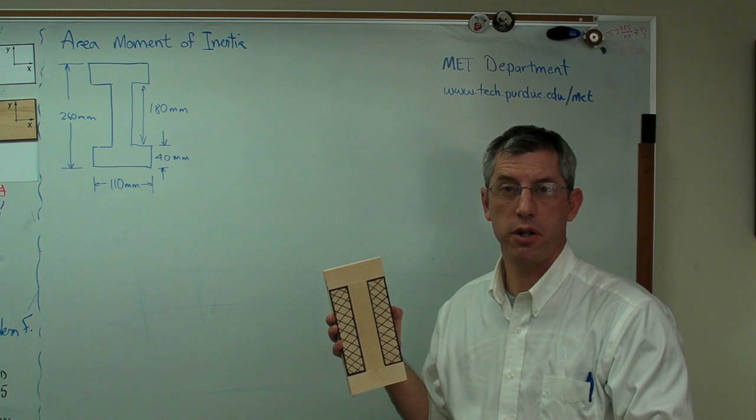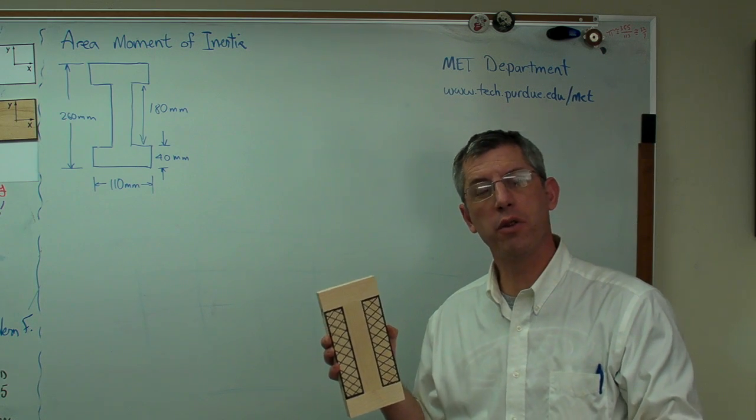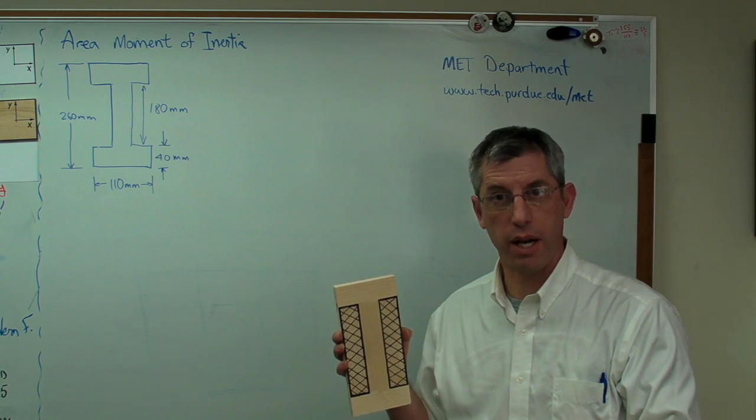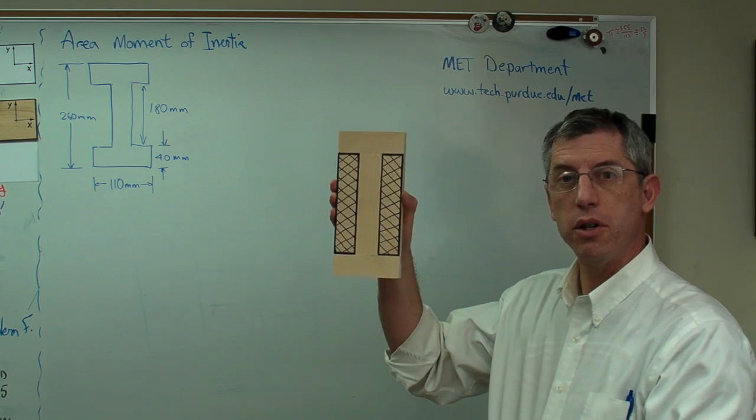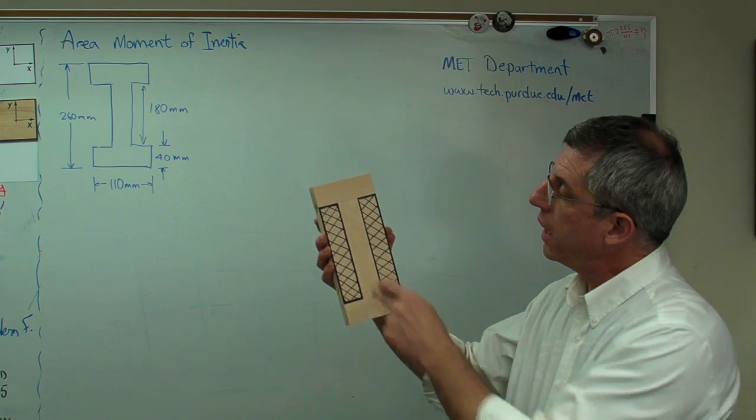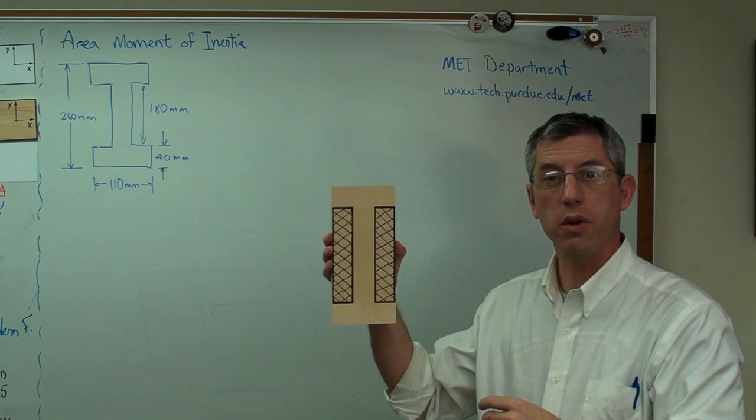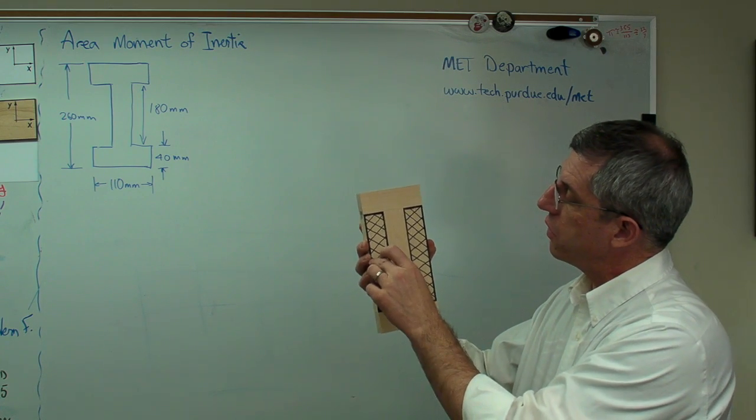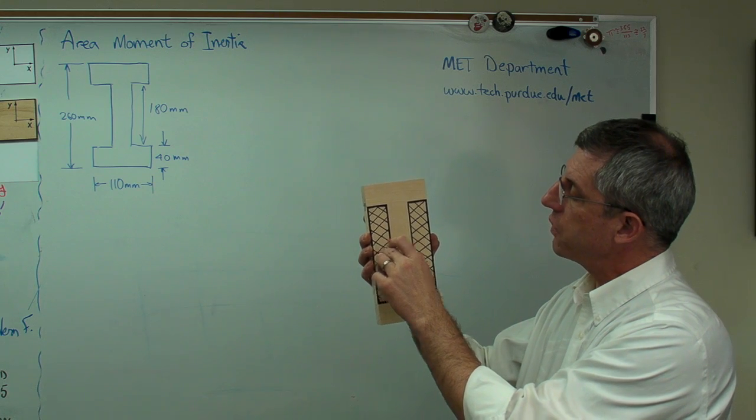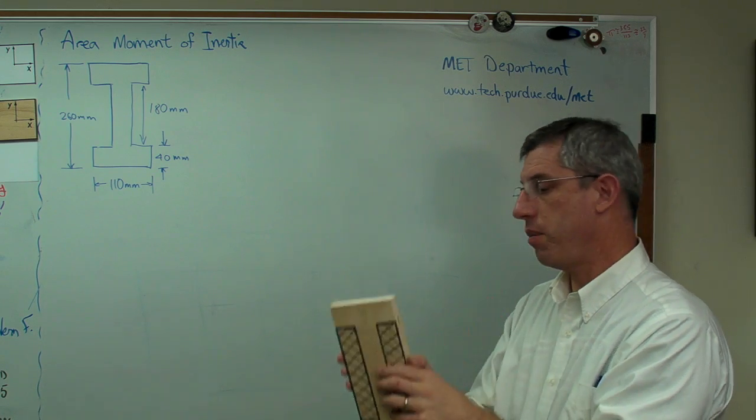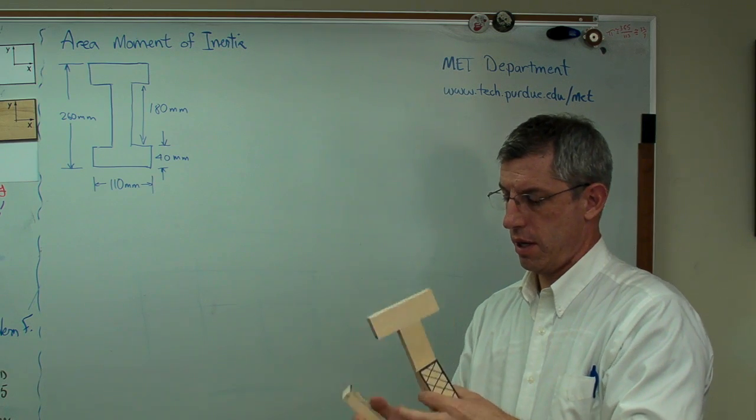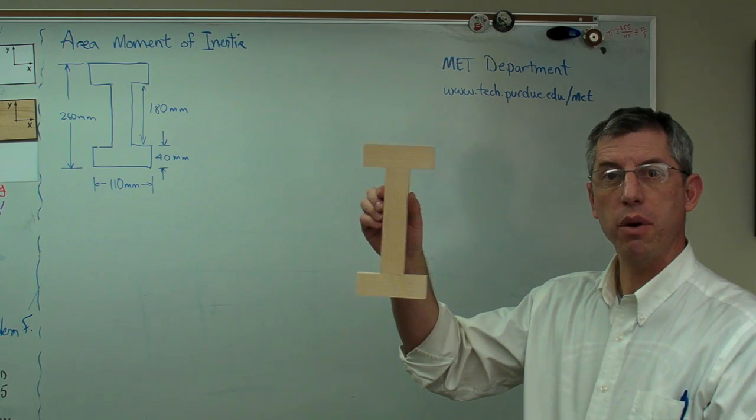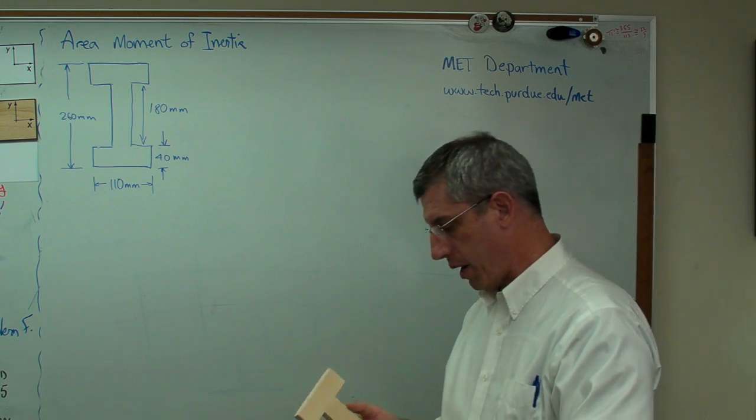We already know the area moment of inertia for a rectangle is 1 over 12 times the base times the height cubed. We know the area moment of inertia of the entire shape and of those. Since these centroids of all three line up, we can just remove these areas. That's called a negative area method.